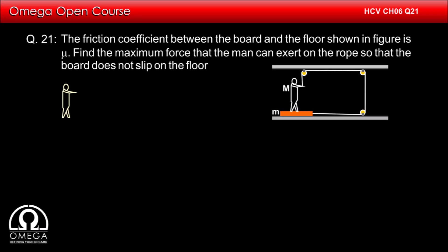Let us first draw the free body diagram of the man. Gravitational force of capital Mg pulls the man in downward direction. The board applies normal contact force N1 in upward direction.